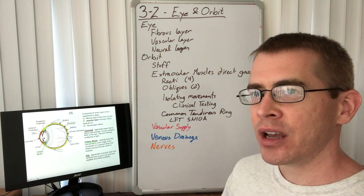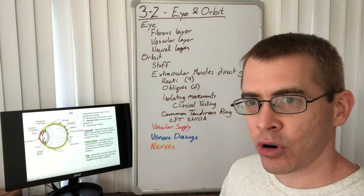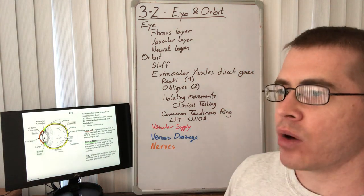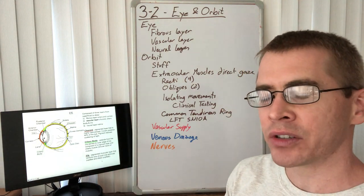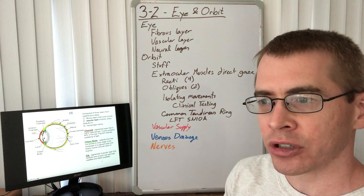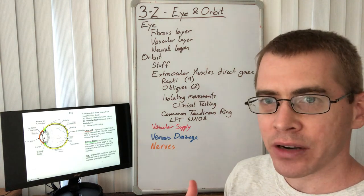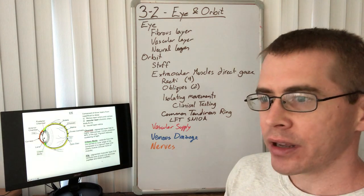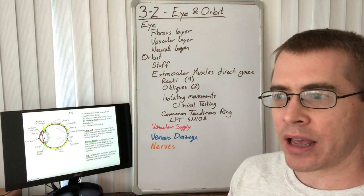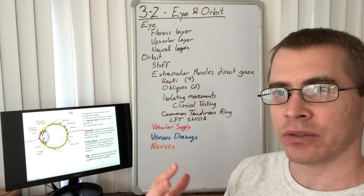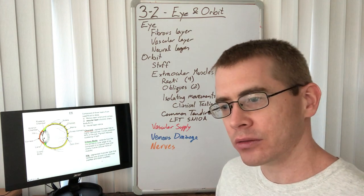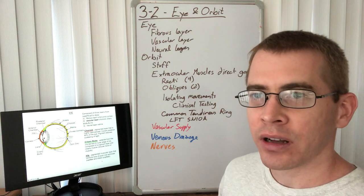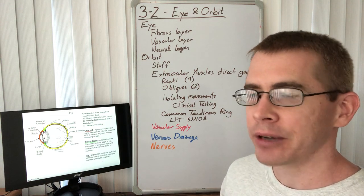The next layer is the choroidal layer, the vascular layer. In this layer we have pigmented cells as well as the vasculature that supplies the retina. The choroid is a pigmentation that helps reduce the refraction of light to clarify your vision and make sure light is not bouncing around hitting different parts of the eye.